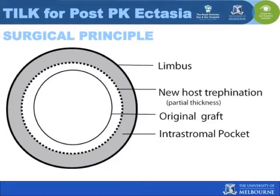For this surgery, a new trephination in the host cornea will be performed approximately one millimetre beyond the site of the original PK. This will be partial thickness, approximately 200 to 250 microns in depth. Once this tissue has been removed, an intrastromal pocket may be created in the remaining peripheral host corneal tissue, extending up to 0.5 millimetres beyond the limbus.